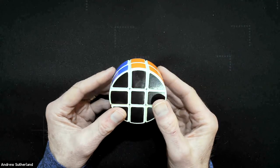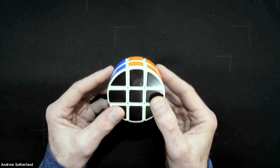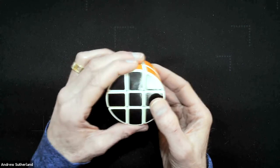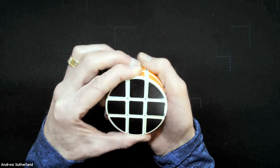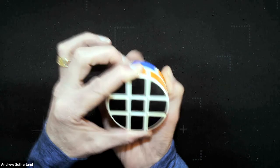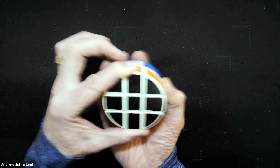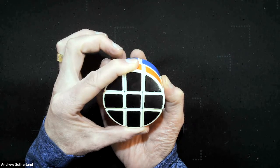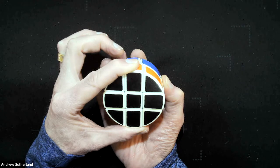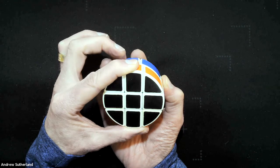And there are seven moves that we can execute on this cube. So the first move, which is denoted with a lowercase b, is to rotate the back edge a quarter turn clockwise, so like this. The next move, which is denoted with a lowercase f, is to do the opposite: to rotate the back face a quarter turn counterclockwise.